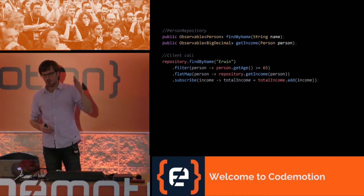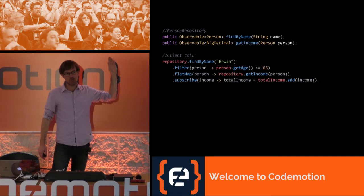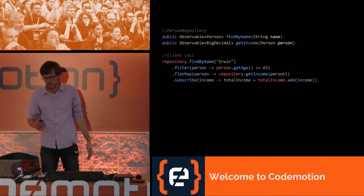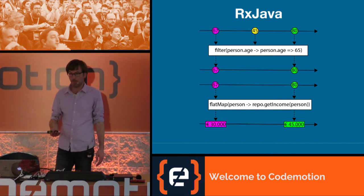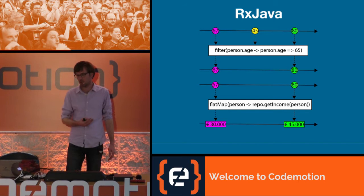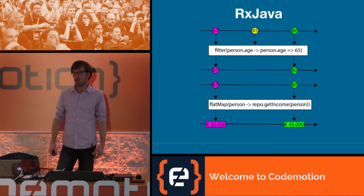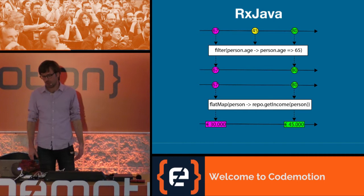You can describe observable operations using a marble diagram. On the diagram for filter, items 67, 45, and 80 come in — only 67 and 80 pass through because we want people over 65. Then from those two people we want their income, so we use flatMap combined with an asynchronous getIncome call, and we get 30,000 and 45,000 euros as their income.